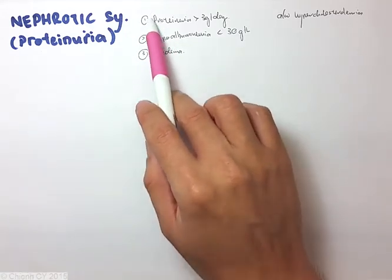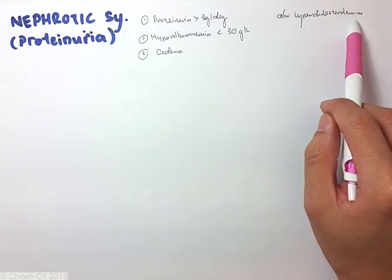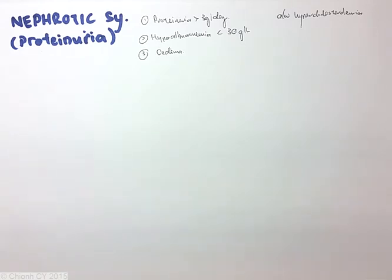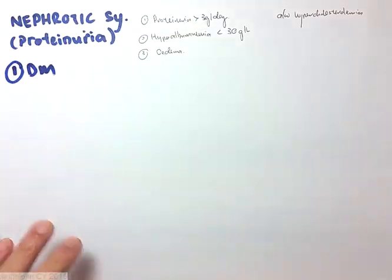All three must be present for us to diagnose nephrotic syndrome. Hypercholesterolemia is an association but is not part of the diagnostic criteria. The commonest cause of nephrotic syndrome in an adult is diabetes mellitus. This must be excluded in any adult patient with nephrotic syndrome.